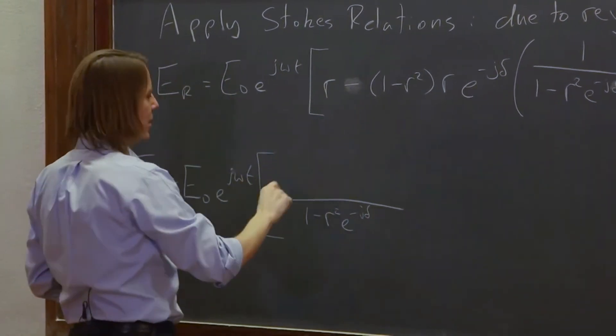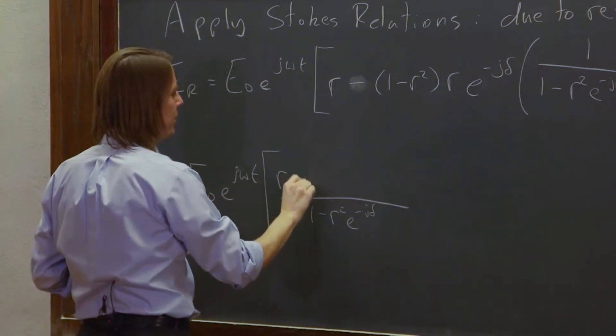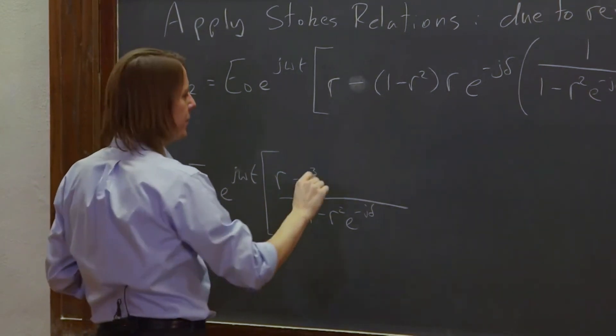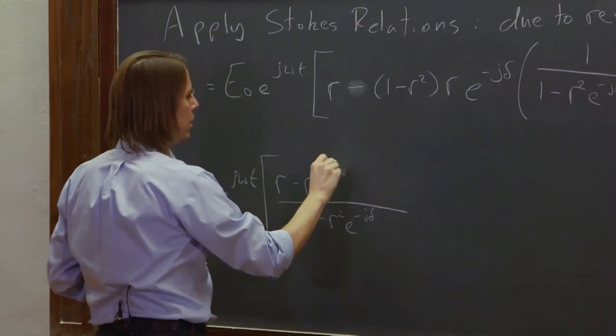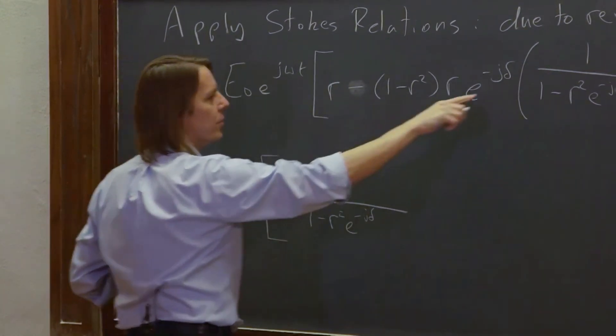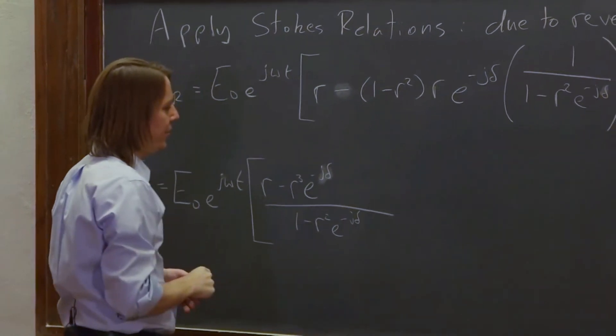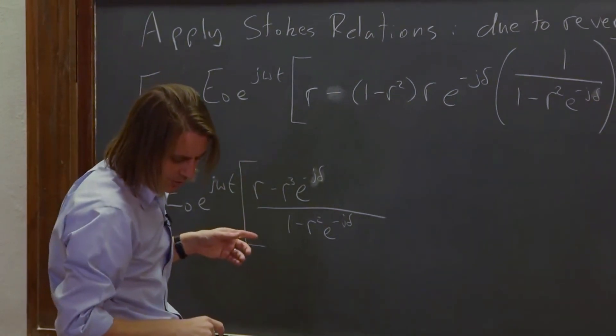This is r times that, r minus r to the third e to the minus j delta. All right, so that's just r times that bottom part, so we have a common denominator. r minus r to the third e to the minus j delta.